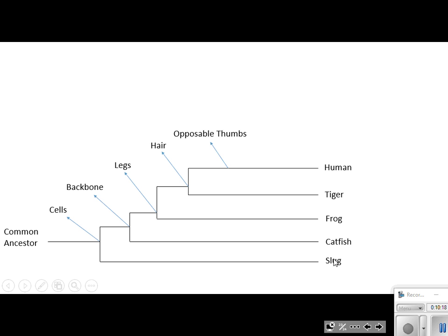The only thing that catfish and the tiger, what do they have in common? Well, they both have cells. They both have backbones. Right? What about the frog? Who's the frog more closely related to? The catfish or the tiger? What do we say? I would say the tiger and why? Because does a catfish have legs? No. Does a tiger have legs? Yes. That's the reason.